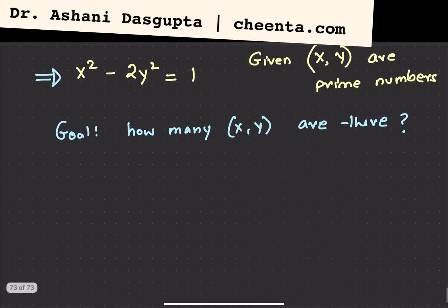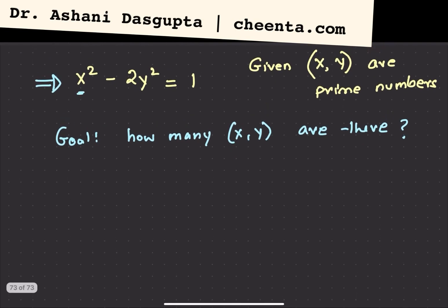Suppose we want to check whether x and y are even prime numbers or odd prime numbers. Notice that the right hand side is odd. 1 is definitely an odd number. 2y square is definitely even. So we conclude that x square, x must be odd.